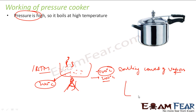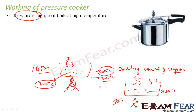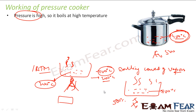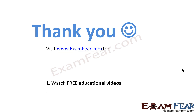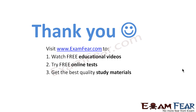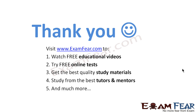If you are boiling something in the open and give 500 degrees Celsius, the maximum temperature water can reach is 100 degrees Celsius before it converts to vapors. But if we close it in a pressure cooker, increasing pressure allows achieving temperatures like 300 or 400 degrees Celsius before vaporization. That is why we use a pressure cooker — the high pressure allows boiling at high temperature. Visit examfier.com to watch free educational videos, try free online tests, get the best quality study materials, and study from the best tutors and mentors.